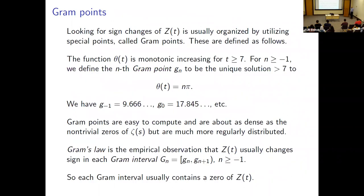Now we have an implementation of Z(t) — but how do we go about finding zeros? Do we just randomly evaluate at 1000, 1010, and look for sign changes? There is a way to organize the search for non-trivial roots: gram points, discovered by Gram. These relate to θ(t), which appeared in both the zeros counting function and the formula for Z(t). The nth gram point is defined as the unique solution to θ(t) = πn, for n ≥ −1 and t > 7.